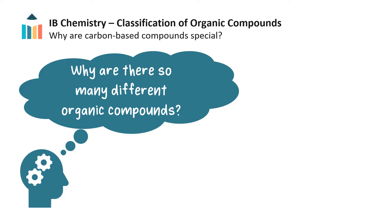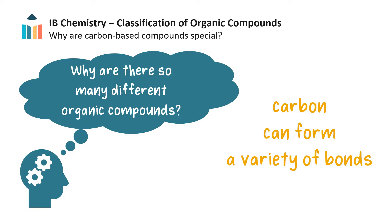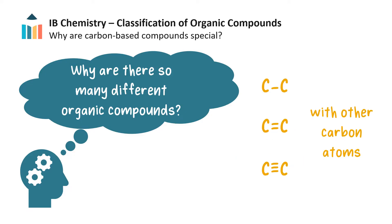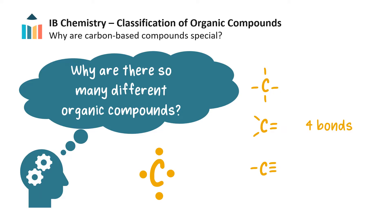Why are carbon-based compounds so special and why are there so many different organic compounds? The utility of organic compounds stems from the variety of bonds that carbon atoms can form. Unlike most elements in the periodic table, carbon atoms may form stable single, double or triple covalent bonds with other carbon atoms, or with a range of other elements. Carbon, with its four valence electrons, needs four electrons to complete its outer shell, and so can form four bonds — more than any other element in its period of the periodic table. Thus, carbon atoms may form many different bonding arrangements.